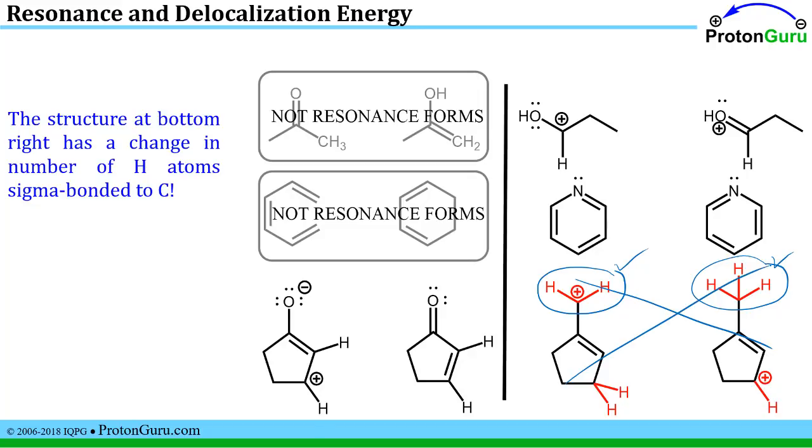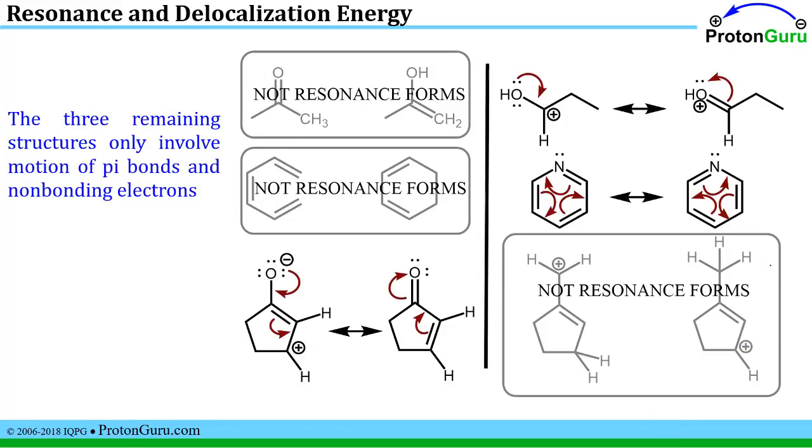So there's no way those two are actually resonance contributors of each other. Again, illustrating why it's very important to fill in the hydrogens before you make your assessment. Now the three remaining proposed pairs of resonance contributors show only movement of pi bonds and non-bonding electrons. And I filled in the curved arrows to show how these structures interconvert back and forth to demonstrate resonance delocalization.